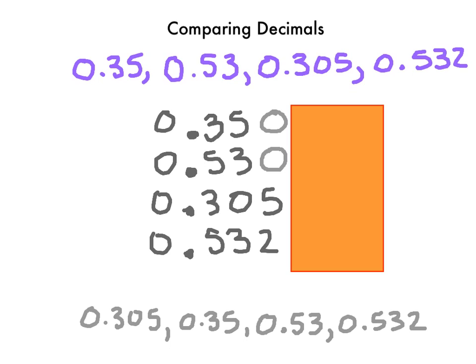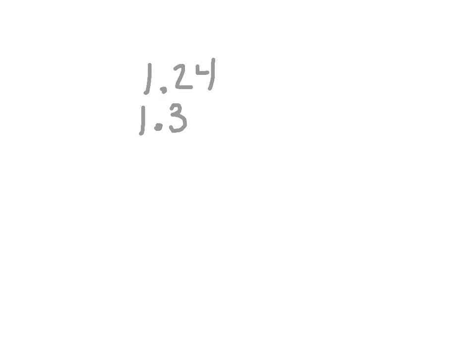What if the whole numbers weren't zeros? Would that change our answer? It could, yeah. You want to do one like that — throw some whole numbers in there? Sure. So let's try a couple of whole numbers. Let's do one and twenty-four hundredths, one and three hundred and five thousandths, zero and twenty-five hundredths. Let's just do that. Are you sure? Yeah, that's good.